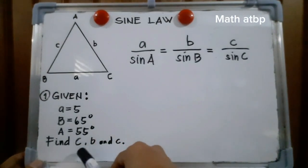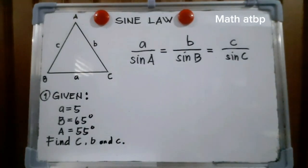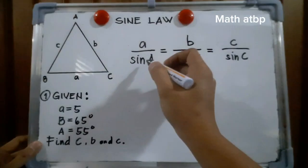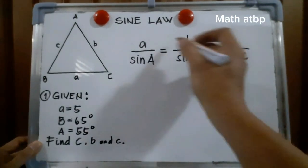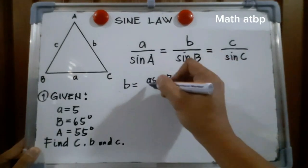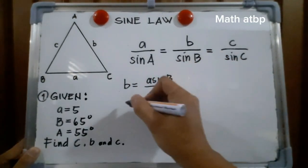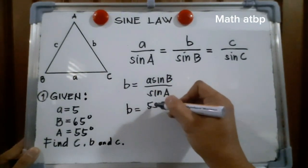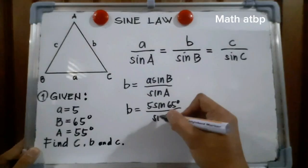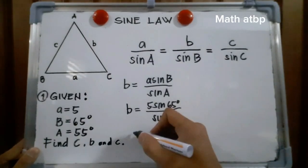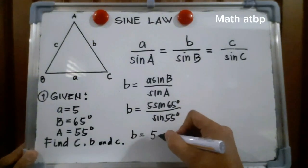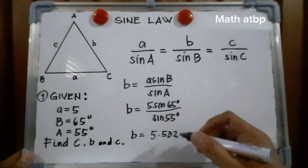Let us find angle C, side B, and side C. Given side A, angle B, and angle A, we may use A over sine A equals B over sine B. From this, side B is equal to A times sine of B divided by sine of A. So B equals 5 times sine of 65 degrees divided by sine of 55 degrees. Therefore, B is equal to 5.532. That is our side B.